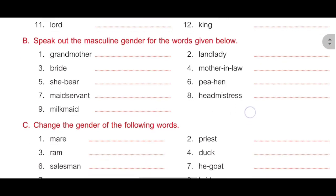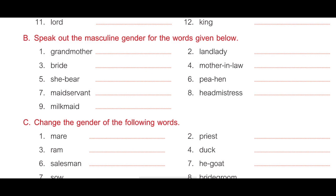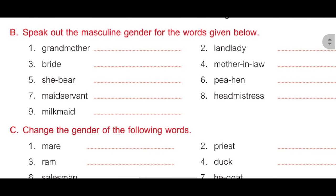Now move on to the second exercise: Speak out the masculine gender of the words given below. First, grandmother — answer is grandfather. Second, landlady — answer is landlord, L-A-N-D-L-O-R-D. Third, bride — answer is bridegroom, B-R-I-D-E-G-R-O-O-M. Fourth, mother-in-law — answer is father-in-law. Fifth, she-bear — answer is he-bear, H-E-B-E-A-R.